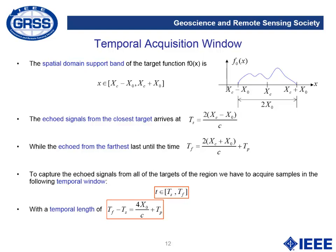The temporal acquisition window needed to correctly store the received signals depends on the spatial support. The echoed signals from the closest target will arrive after a delay that depends on two times the distance from the radar to the first target divided by the speed of light. Similarly, the echoes from the farthest target will last until two times that distance divided by the speed of light plus the duration of the transmitted pulse. These two values define the temporal window used to sample the data correctly.